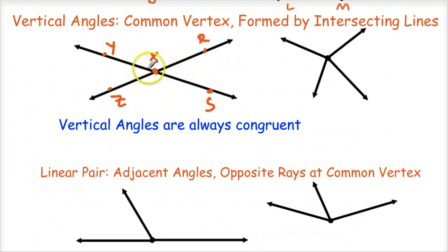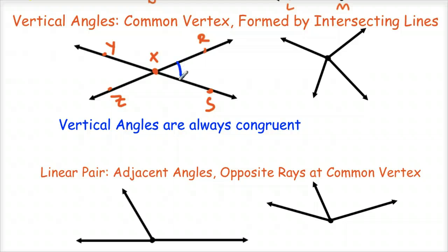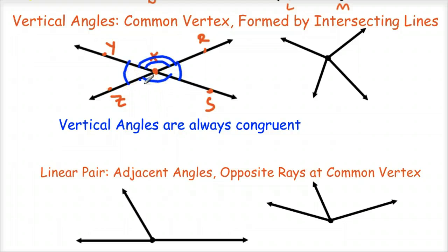The other two angles in this picture are also vertical angles — YXR and ZXS are also vertical angles. Another neat fact about vertical angles is that they're always congruent. So angle RXS is congruent with YXZ — I put one little arc on those. And YXR and ZXS are also congruent to each other, but not to the other two. That's why they get two arcs to distinguish that those two are congruent, as opposed to the one arc on the other pair.